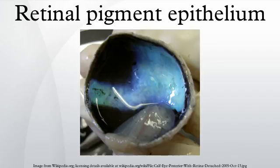The pigmented layer of retina, or retinal pigment epithelium (RPE), is the pigmented cell layer just outside the neurosensory retina that nourishes retinal visual cells, and is firmly attached to the underlying choroid and overlying retinal visual cells.